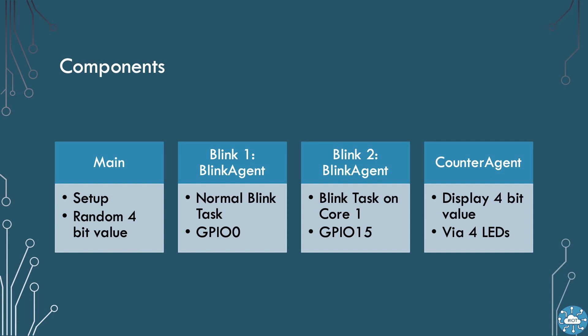Counteragent is what will display the 4-bit value 0 to 15 on the four red LEDs. It runs as a task taking its commands from a queue. Our main task is really where the SMP work will be done. The main task will associate the other tasks with the appropriate cores. It will also generate and send the random number between 0 and 15 to the counteragent.